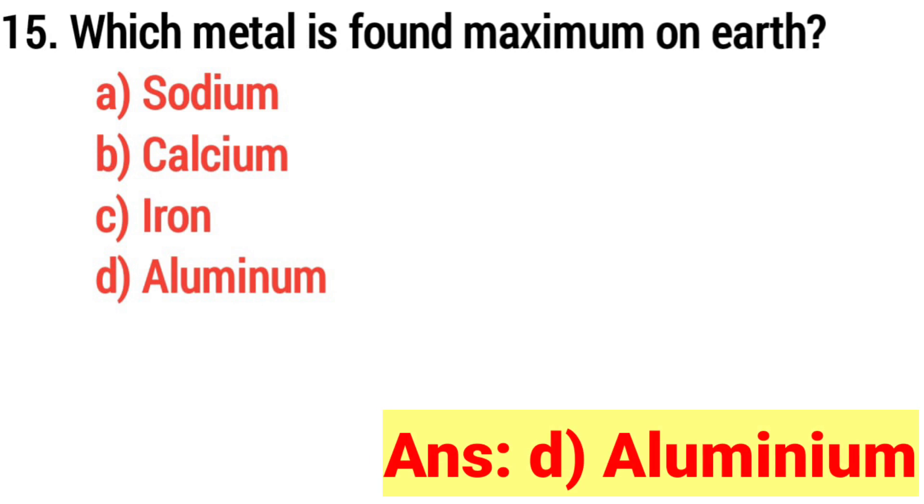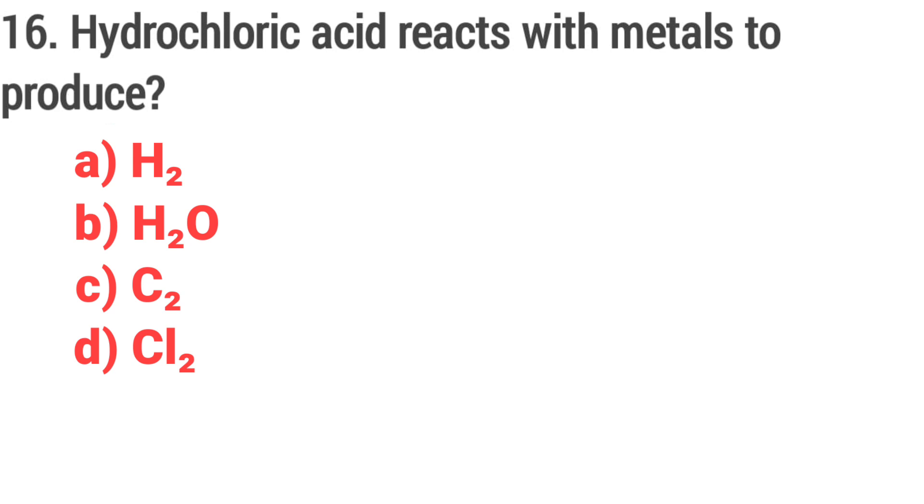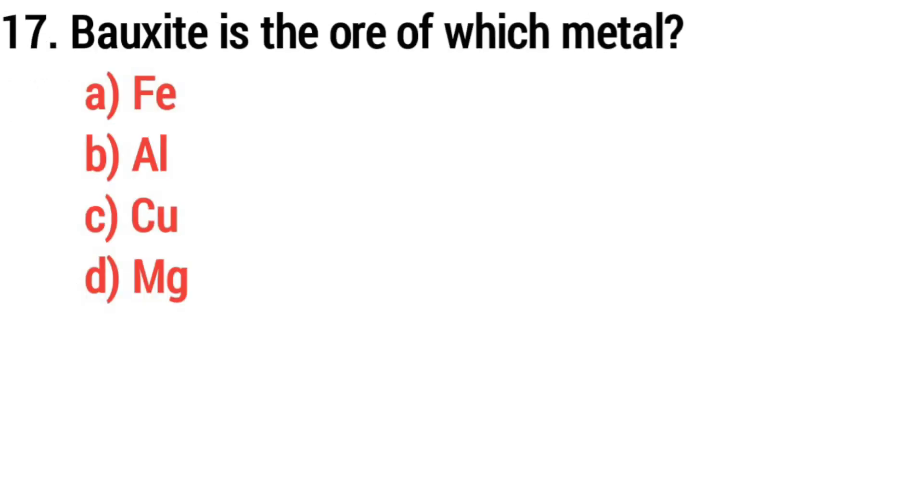Answer: option D, aluminum. Question 16: hydrochloric acid reacts with metal to produce? Answer: option A, H2. Question 17: bauxite is the ore of which metal?